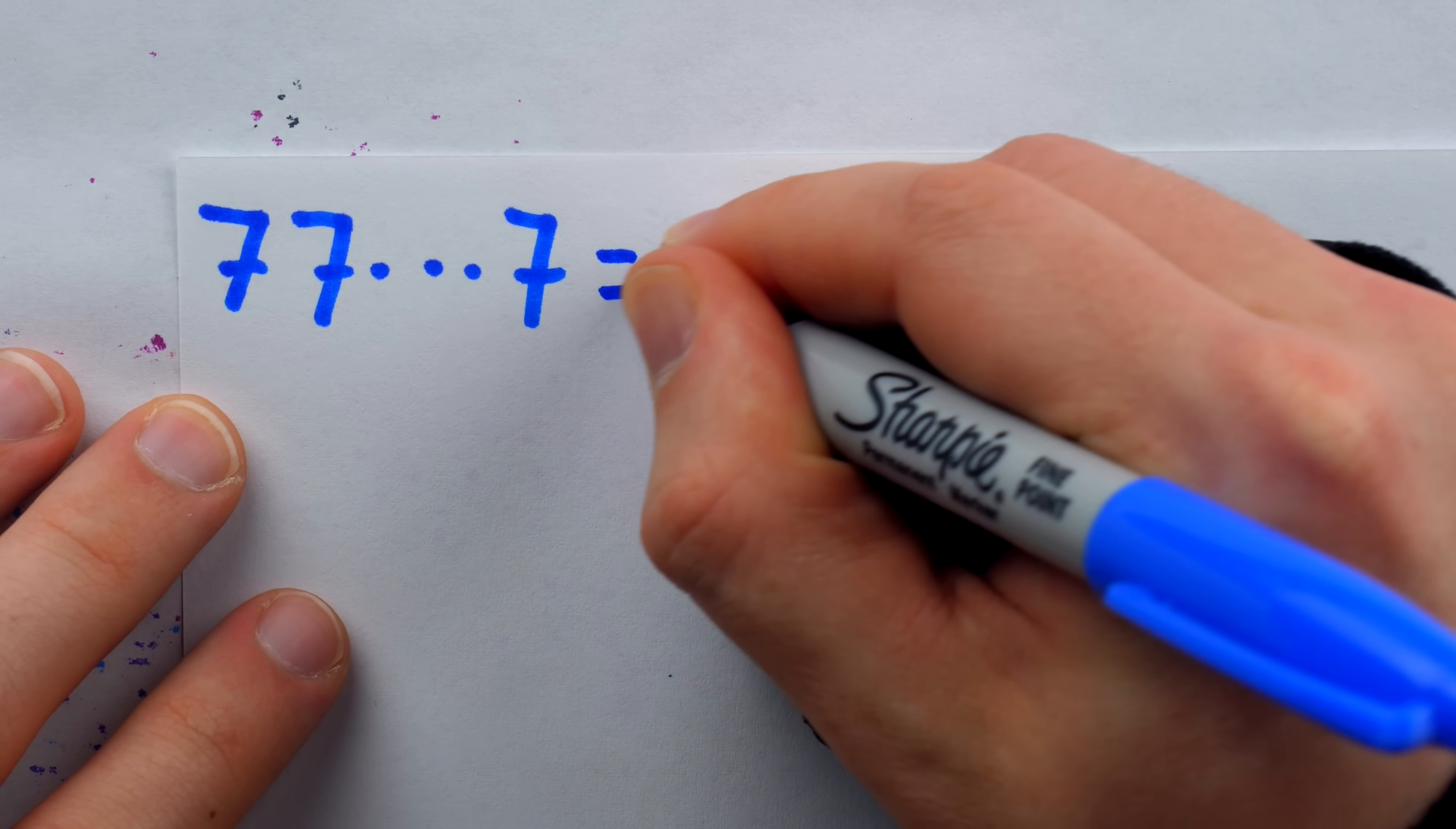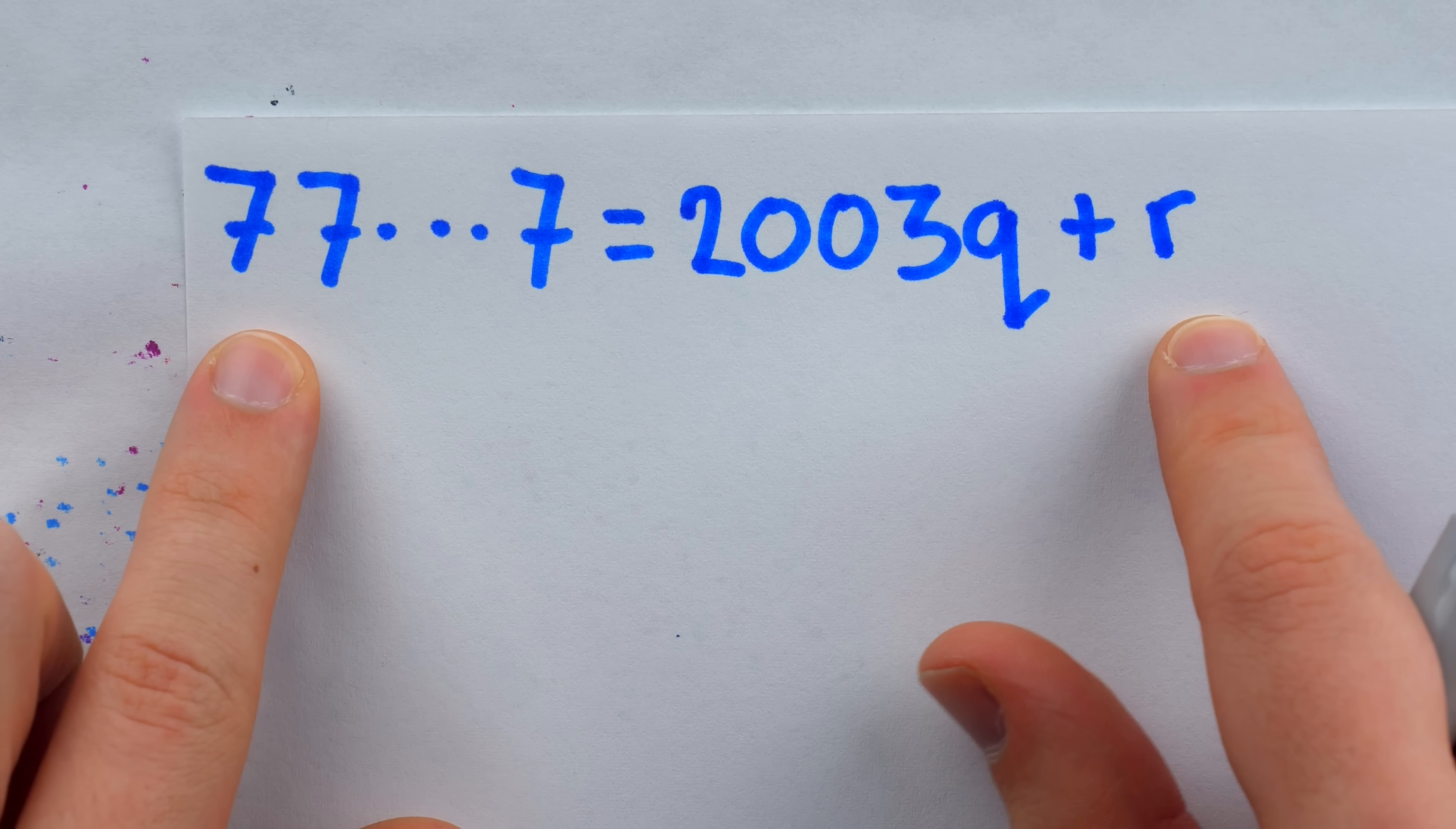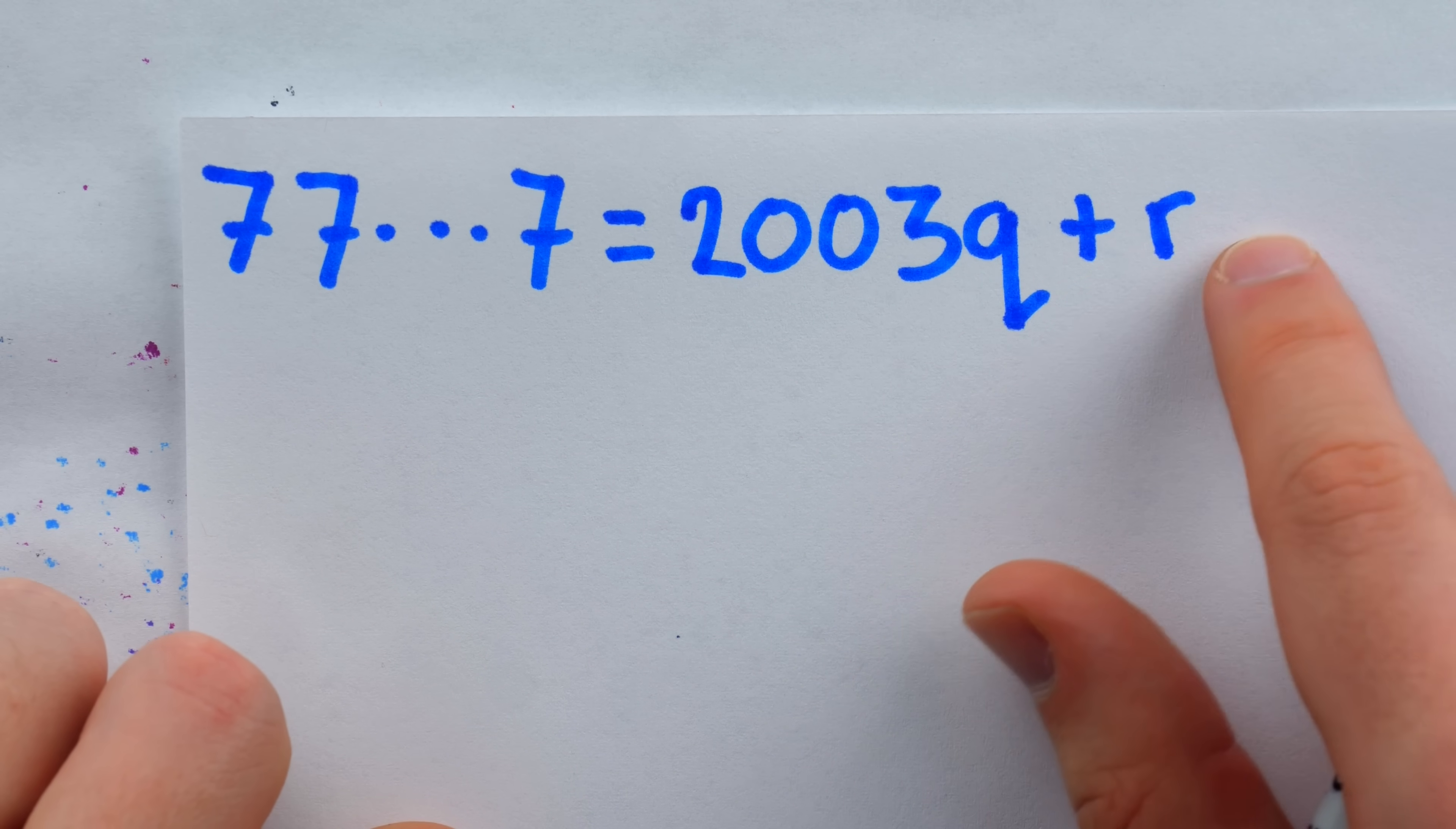It's just a bunch of sevens. Then, by Euclid's division lemma, whatever this number is, it must equal 2003 times some quotient Q plus a remainder R. This is just representing division as an equation. When we divide this term of the sequence by 2003, we get some quotient, that's how many times 2003 goes into the number, plus some remainder.